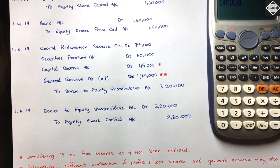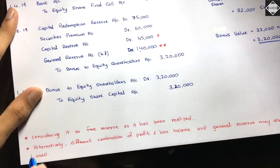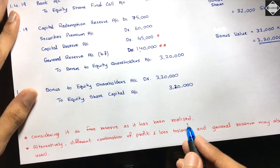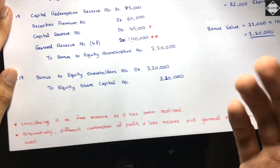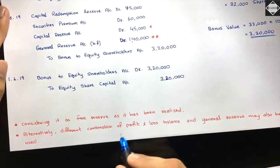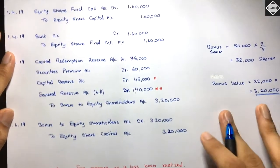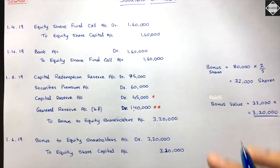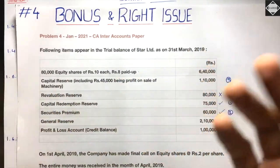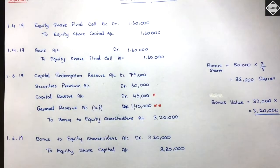Notes: The ₹45,000 capital reserve is realized in cash — from sale of machinery — so it is treated as a free reserve for bonus purposes. Alternatively, ₹1,40,000 from free reserves can be taken in any combination, e.g., ₹1,00,000 from Profit & Loss and ₹40,000 from General Reserve. The tricky part was the capital reserve: only ₹45,000 realized in cash can be used. That's it for this video — see you in the next one, bye.